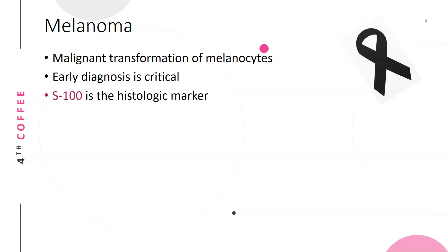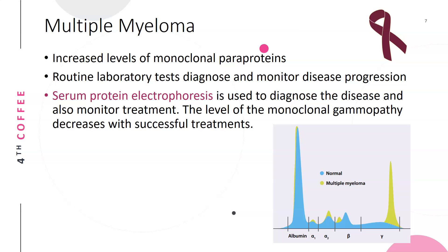Melanoma is a malignant transformation of the melanocytes, which are the cells in your skin that give you your skin color. Early diagnosis is critical. The S100 marker is the histologic marker for melanoma.